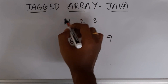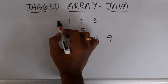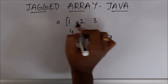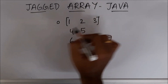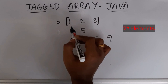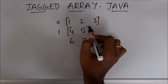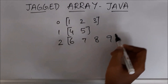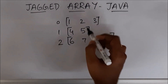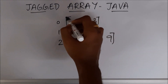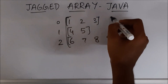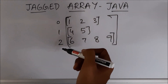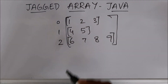This is a jagged array in which row number 0 has only 3 elements, row number 1 has 4 elements, and row number 2 has 4 elements. So this is a 2D array which has a different number of elements in each row.